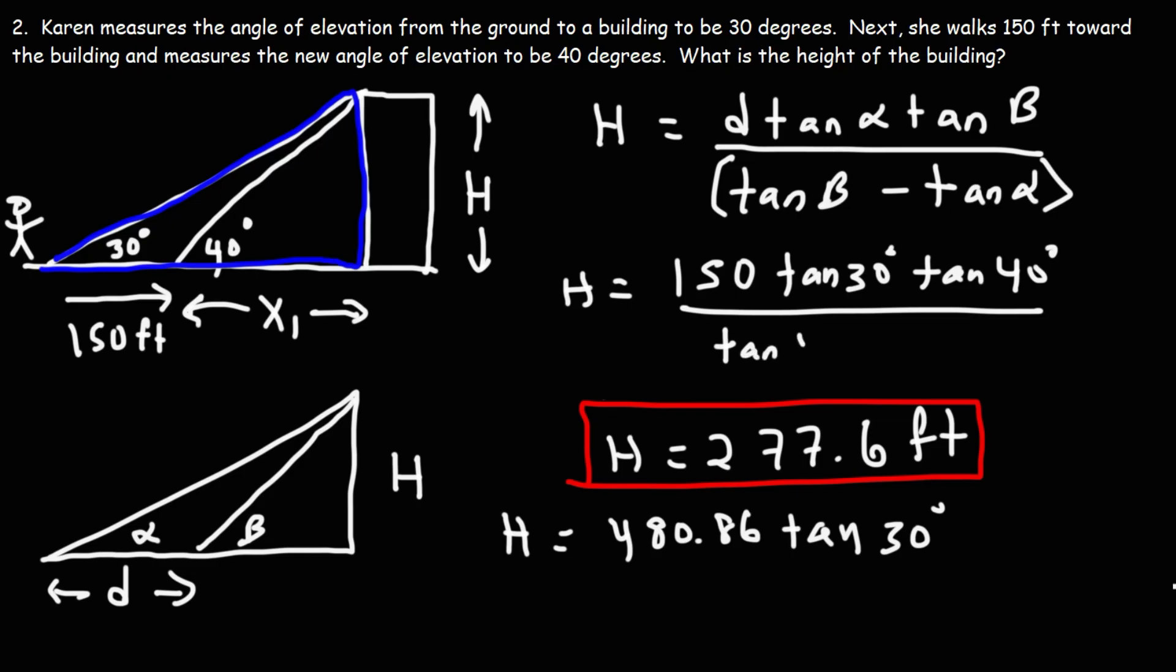So this is going to be tangent 40 minus tangent 30. If you type in tan 30 minus tan 40, you'll get a negative number. So for the bottom part, the bigger angle goes first, and that will give you a positive answer.